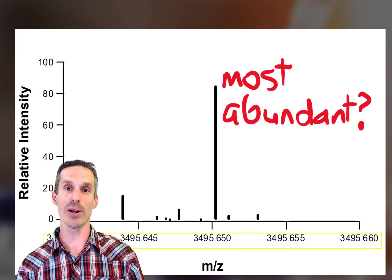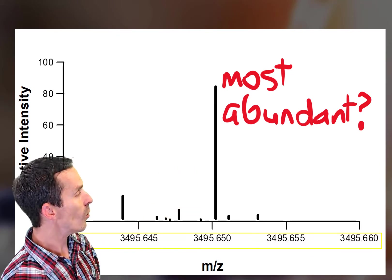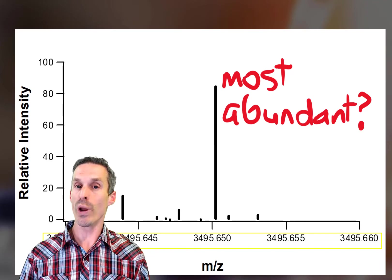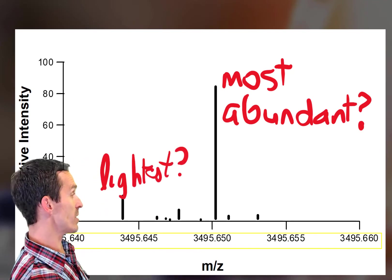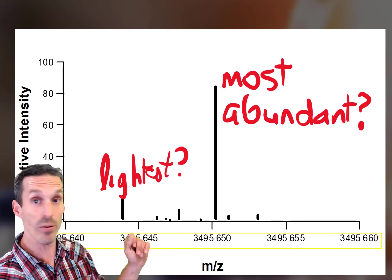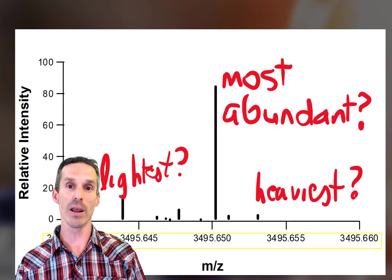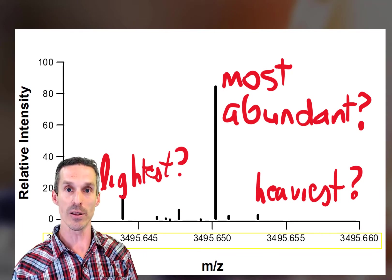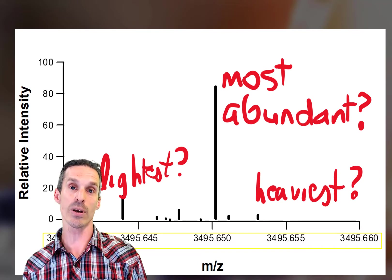Now I could ask the question: because we know that there's so many different ways to get to these different isotopes, what about that big one over there? Like which isotope combination makes that? Or other questions like: how about the smallest one or the biggest one on the list? Which isotopic combination comes up to give you those particular peaks? I'm not going to answer that for you here, but I'll leave that as a question for you to think about.